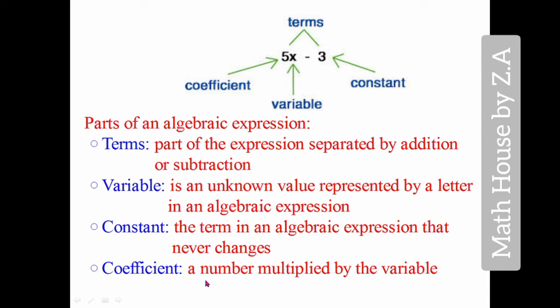As you can see here, coefficient is a number multiplied by the variable. Any number with a variable is a coefficient. What about the constant term? A constant is a term in an algebraic expression that never changes - it's a symbol with a fixed numerical value.